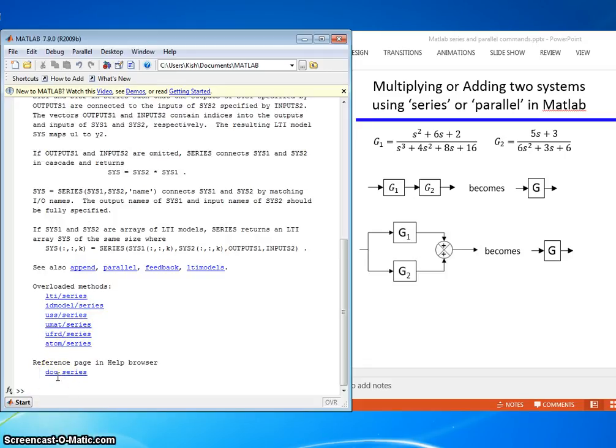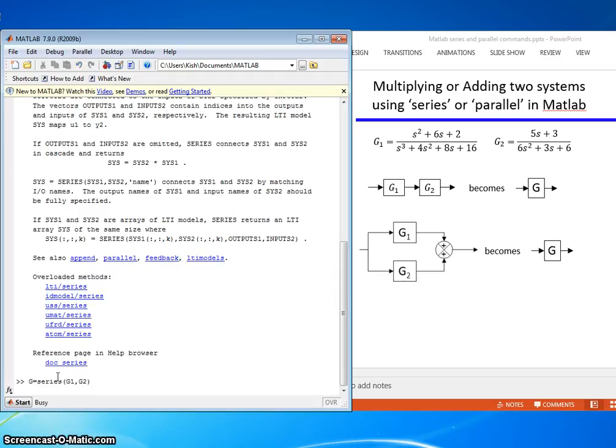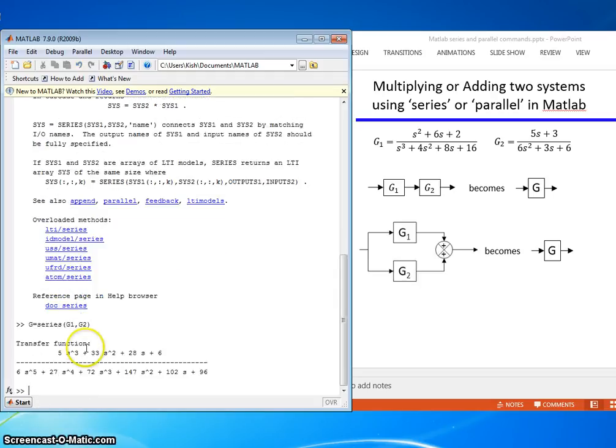So in this case, I would just go G equals series G1 comma G2. And that's the system. So you don't have to multiply polynomials using convolve. You just use the series as a more efficient way to do that.